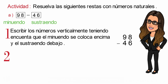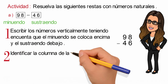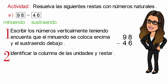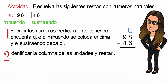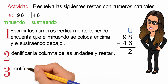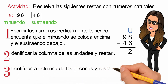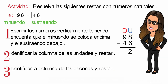Paso número 2: identificar la columna de las unidades y restar. Paso número 3: identificar la columna de las decenas y restar. 9 menos 4 es igual a 5. Y este resultado lo escribimos en la operación de 98 menos 46.